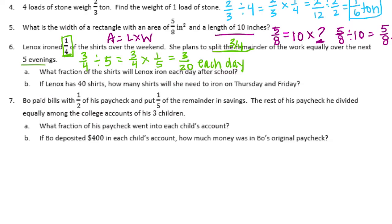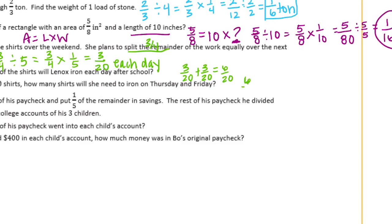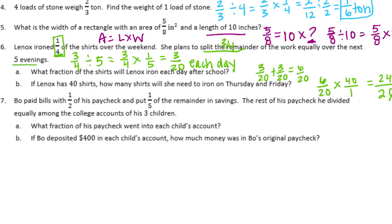If Lennox had 40 shirts, how many shirts will she need to iron on Thursday and Friday? For two days that would be three-twentieths plus three-twentieths, so that's six-twentieths. She has 40 shirts, so we can do six-twentieths times 40. Six times 40 is 240 divided by 20 — canceling those out we have 24 over 2 — and 24 divided by 2 is equal to 12. So she's going to need to iron 12 shirts.